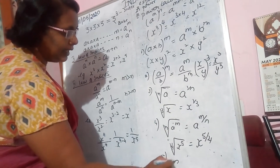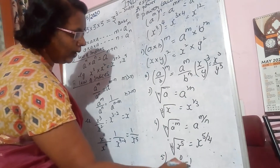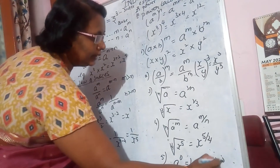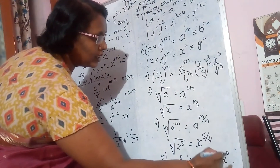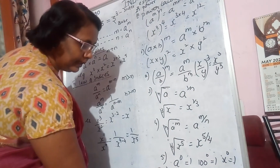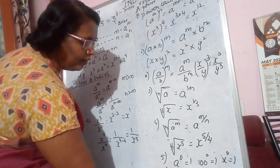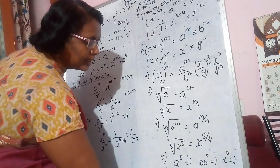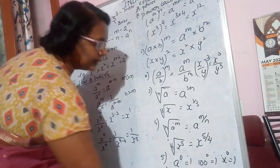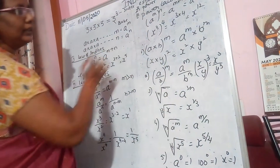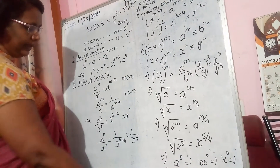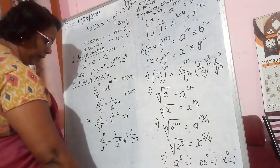Anything raised to the power of 0 equals 1. So 100 raised to the power of 0 is 1, and x raised to the power of 0 is 1. And anything raised to the power of 1 is the number itself — x raised to the power of 1 is x. These are the things you should remember when solving problems.